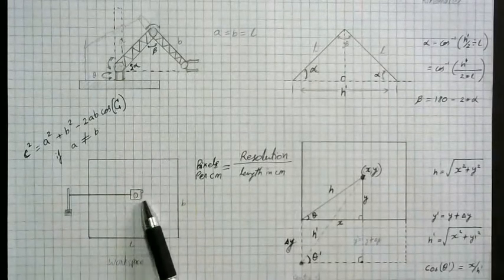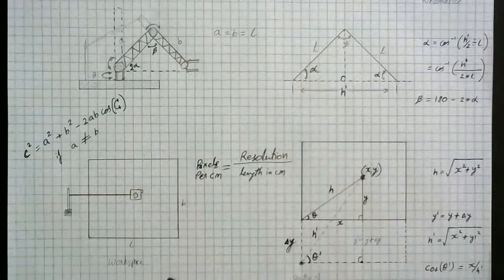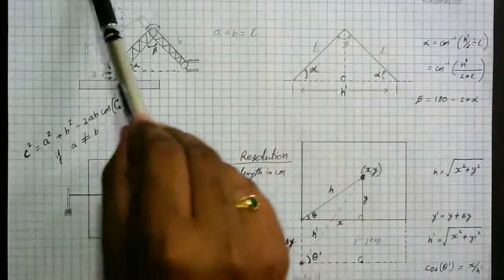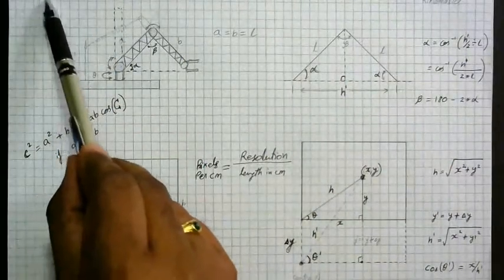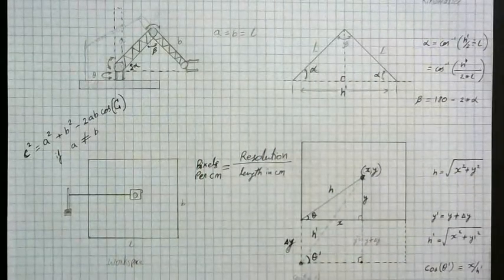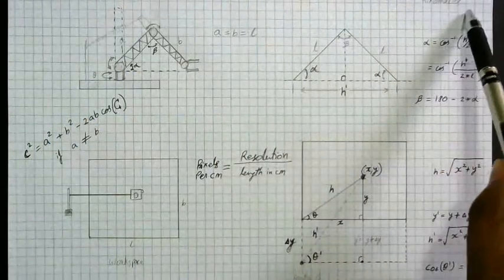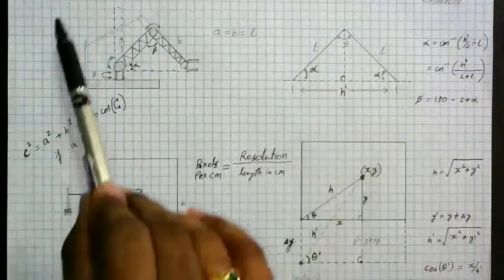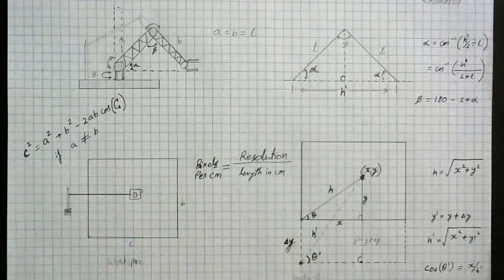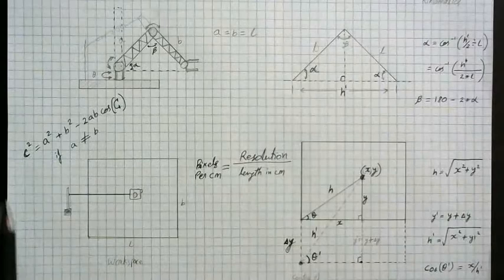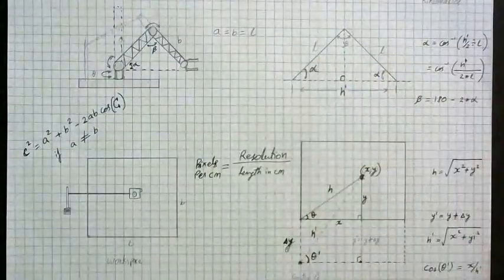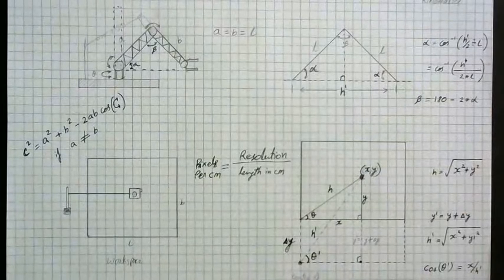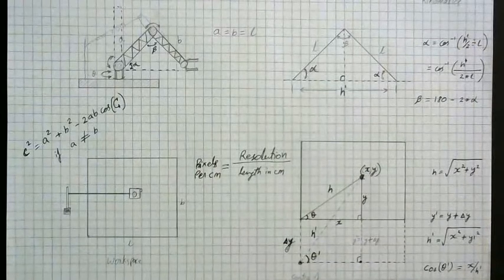When you set up this camera on the work area, you have to make sure the frame which you have taken forms a rectangle. So when you draw lines around the edges of the frame, it has to form a perfect rectangle. If you solve these two constraints, then all these calculations will be very easy and I am just using geometrical equations to solve the problem.